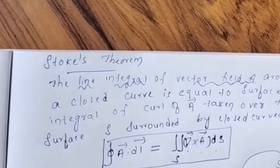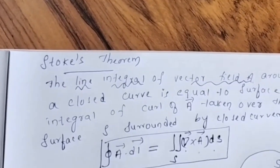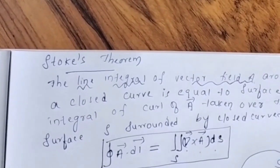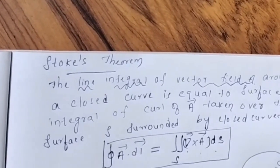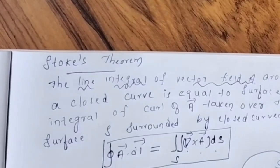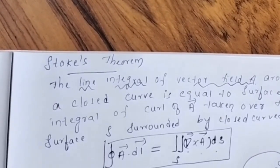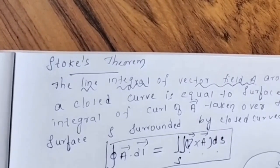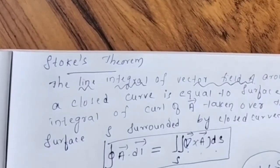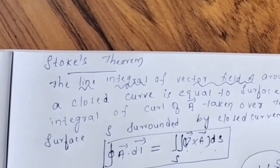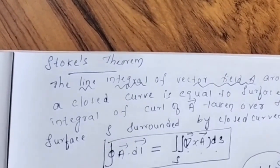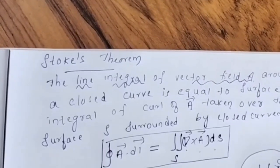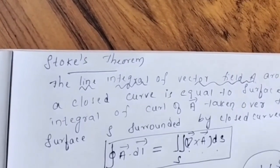Now let us go for the proof. First, what we will do is divide the closed surface into a large number of square loops. I am dividing the surface into a large number of square loops. Let A be the vector. The square loops we assume as dS1, dS2, and so on.